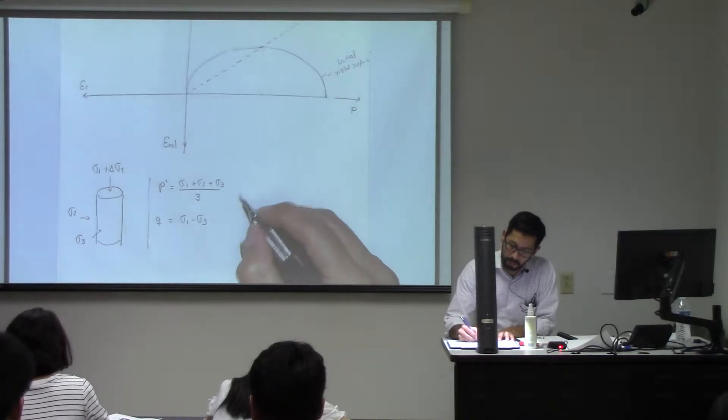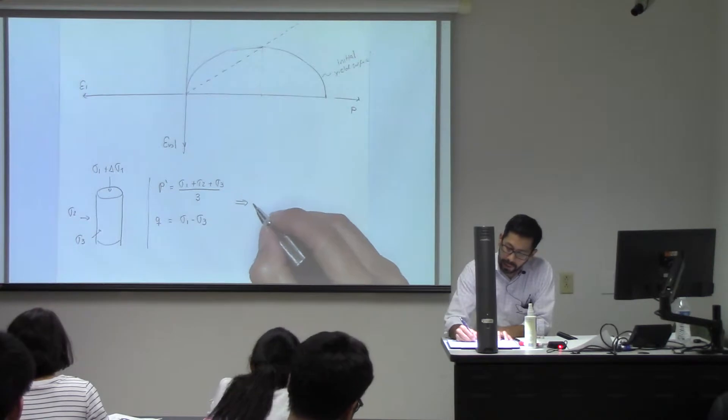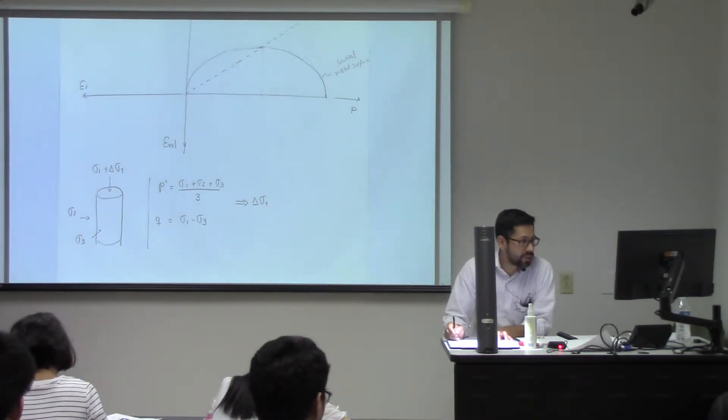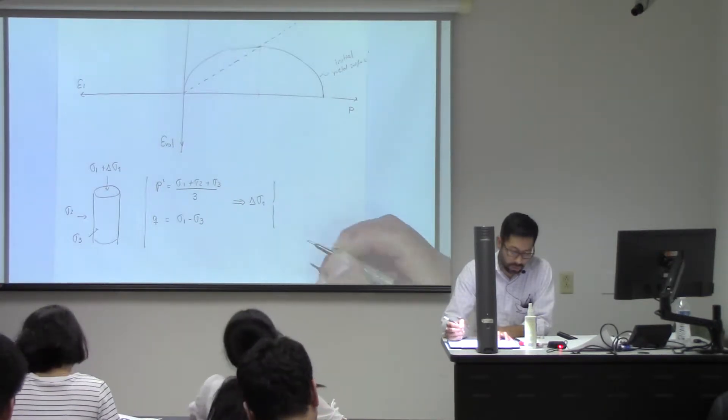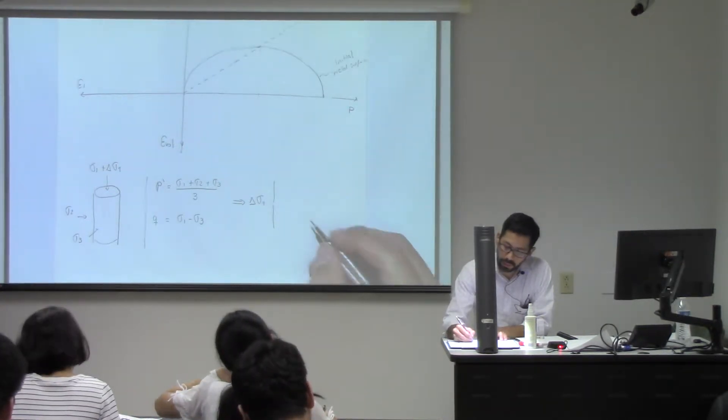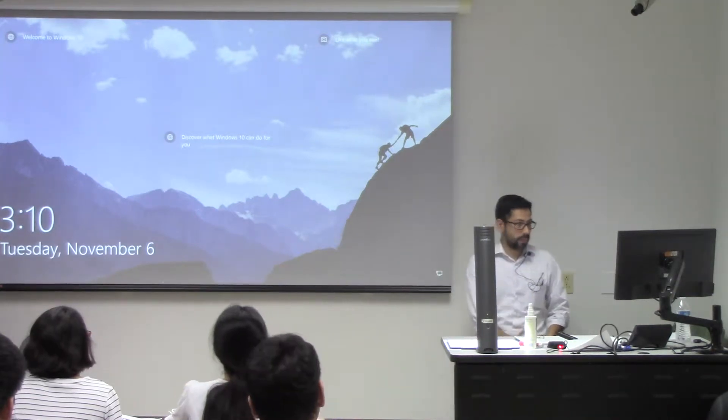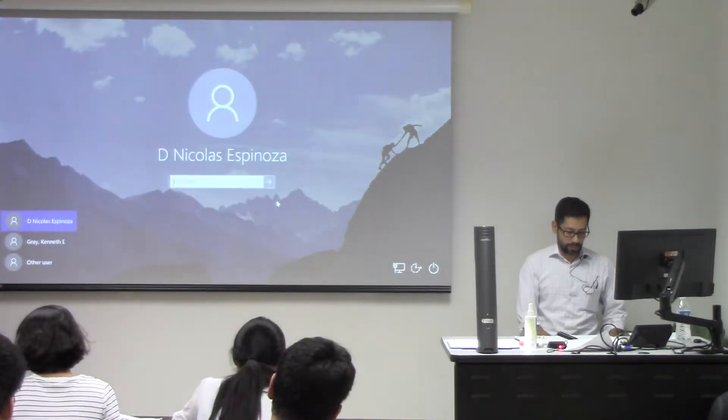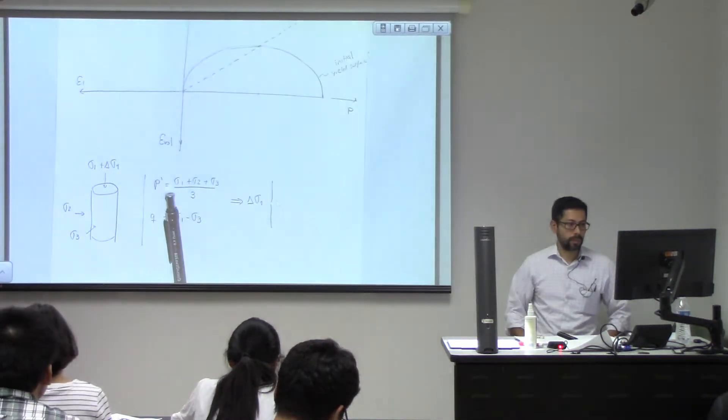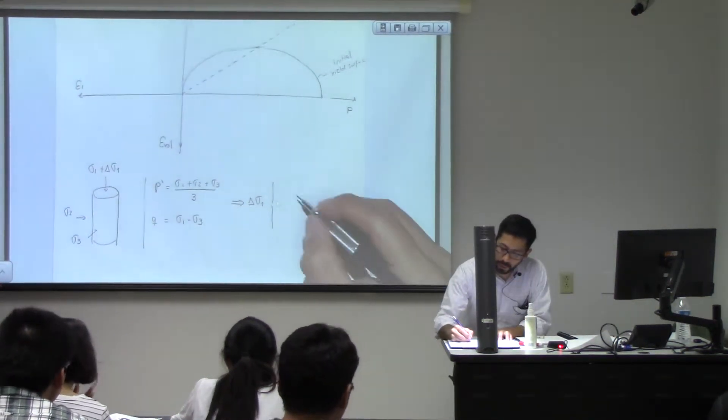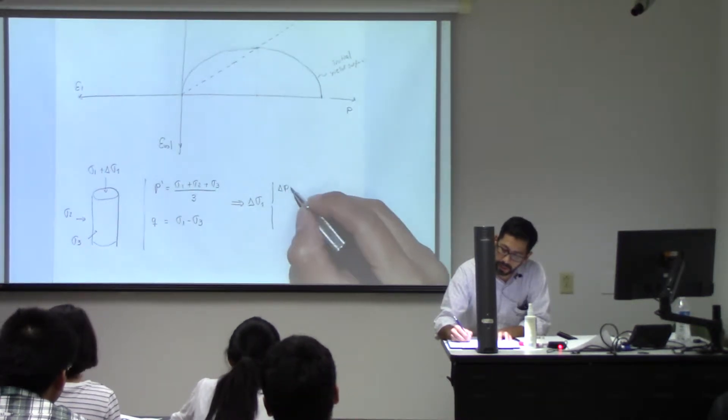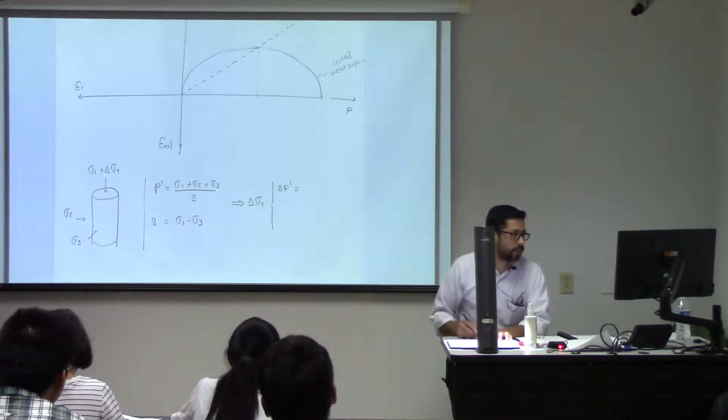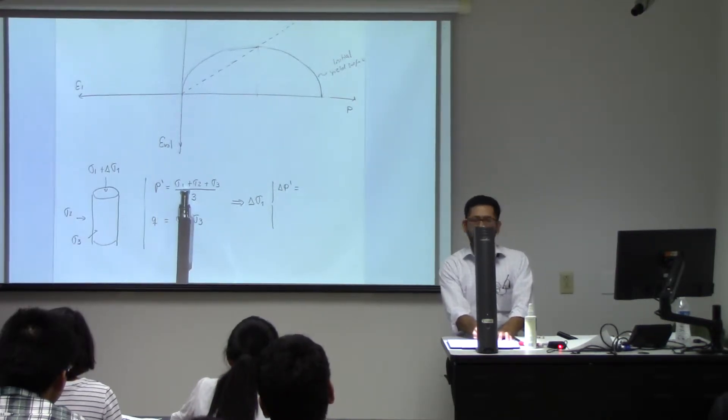So if I apply a change of the axial stress, that's going to lead to what is going to be the change of the mean stress. So what I'm asking is, if I apply this, what is going to be the change in delta P prime, or basically what is the derivative of P with respect to sigma one?